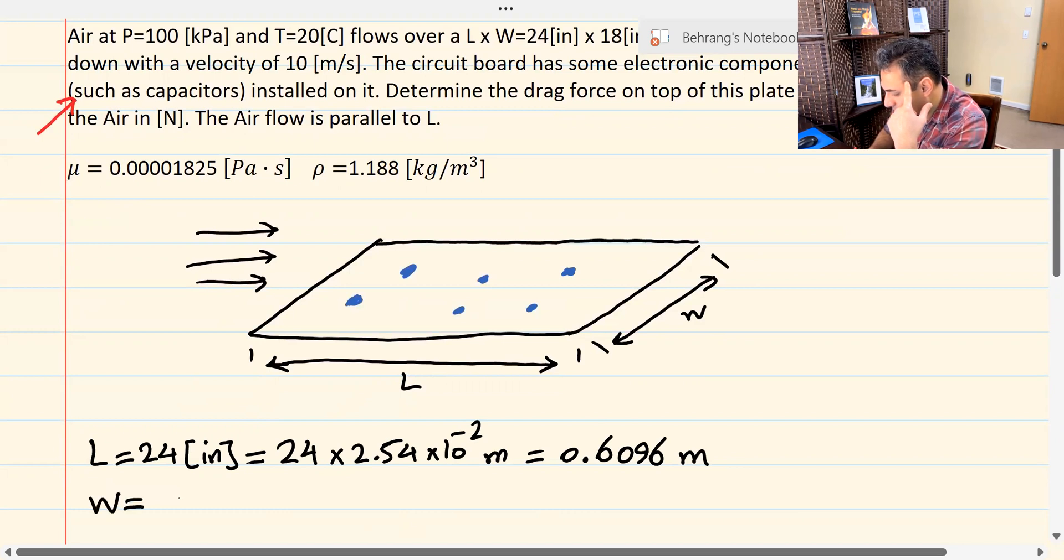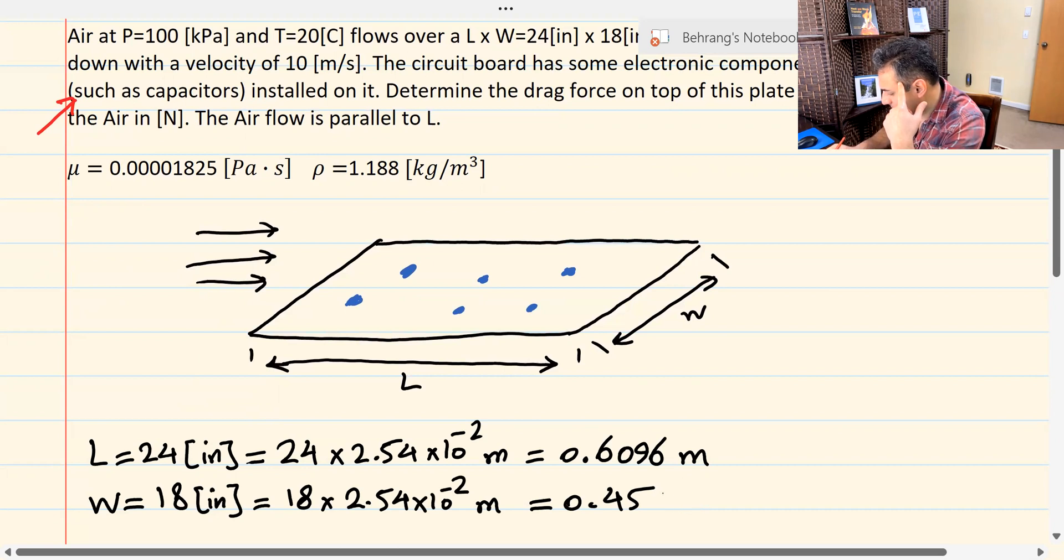That would be length. And W, which is 18 inches, equals 18 times 2.54 times 10 to the negative second meters. That turns out to be 0.457. Make sure you calculate these numbers using your calculators to make sure I am giving you the correct values. Okay, so this is W and that's L. I got these two values.